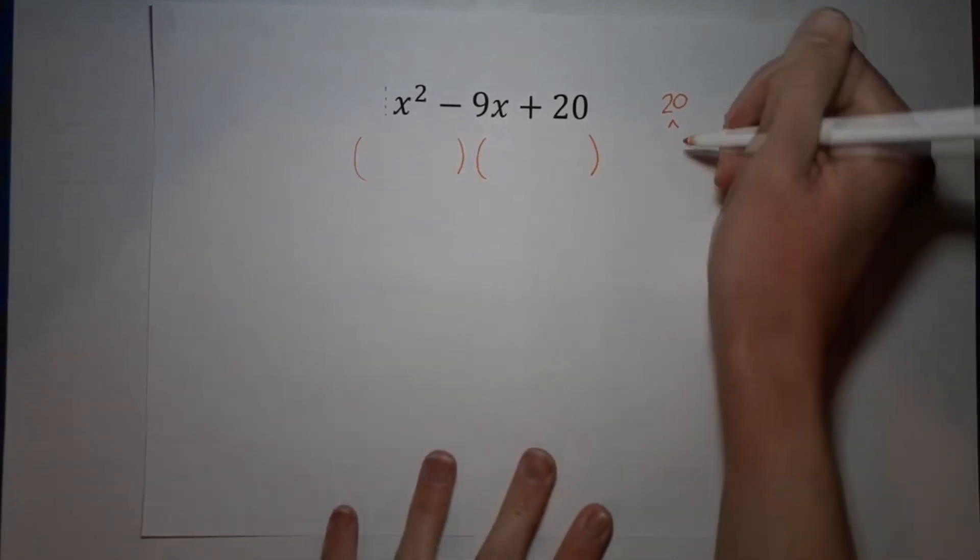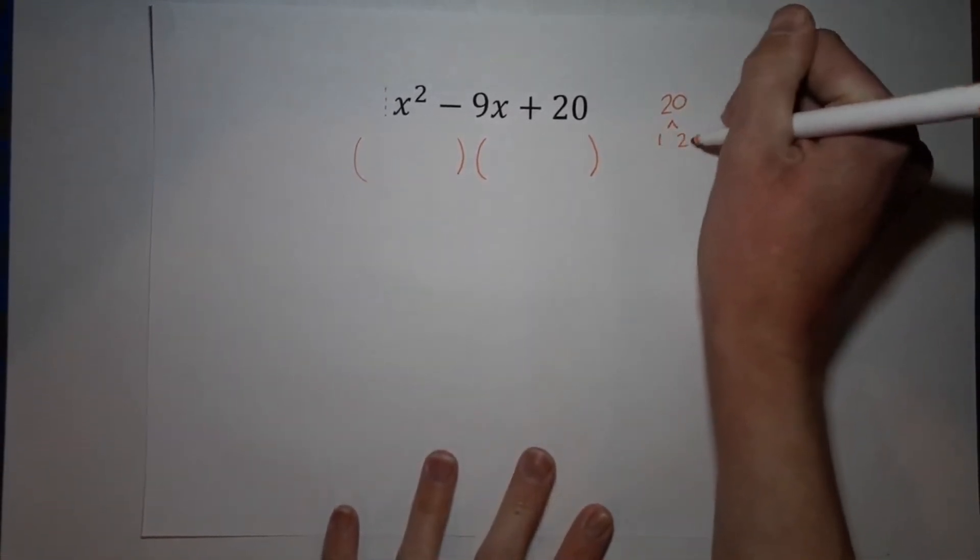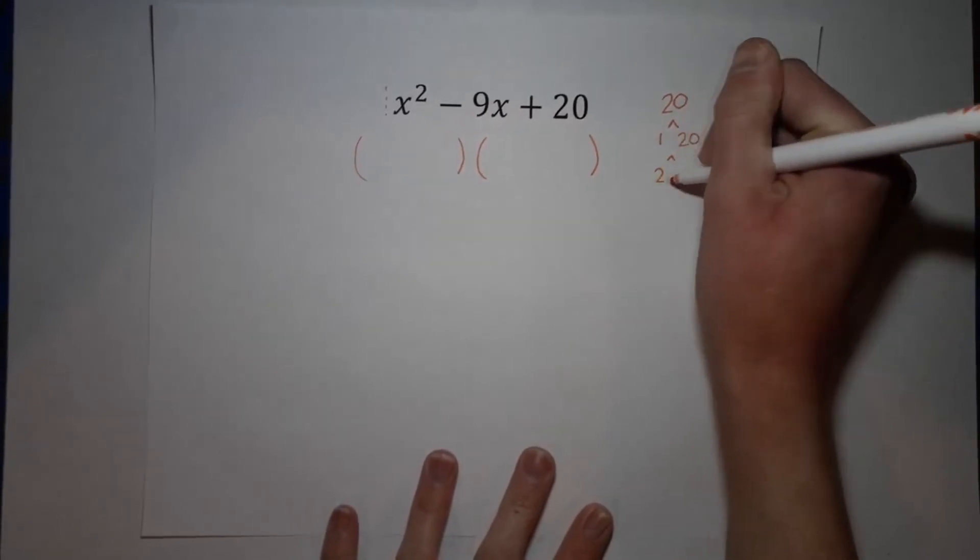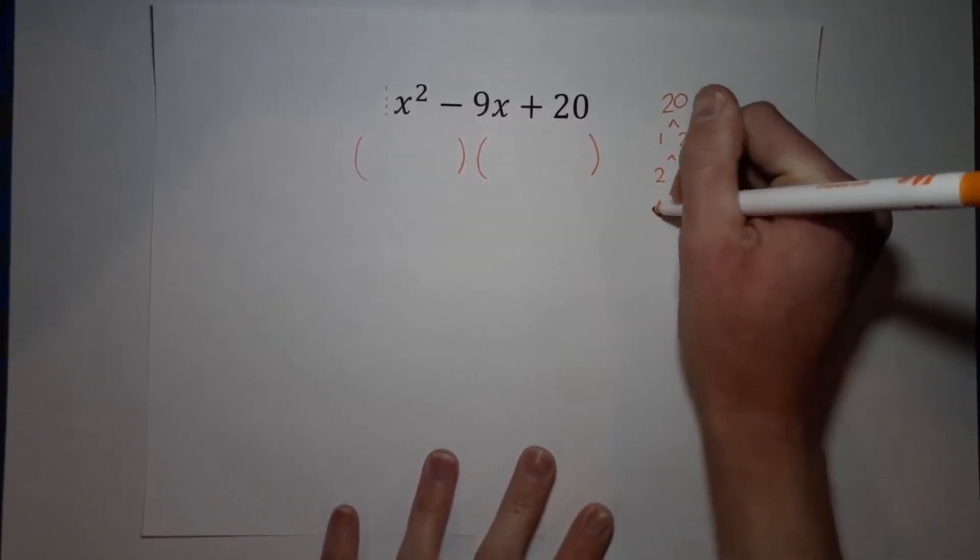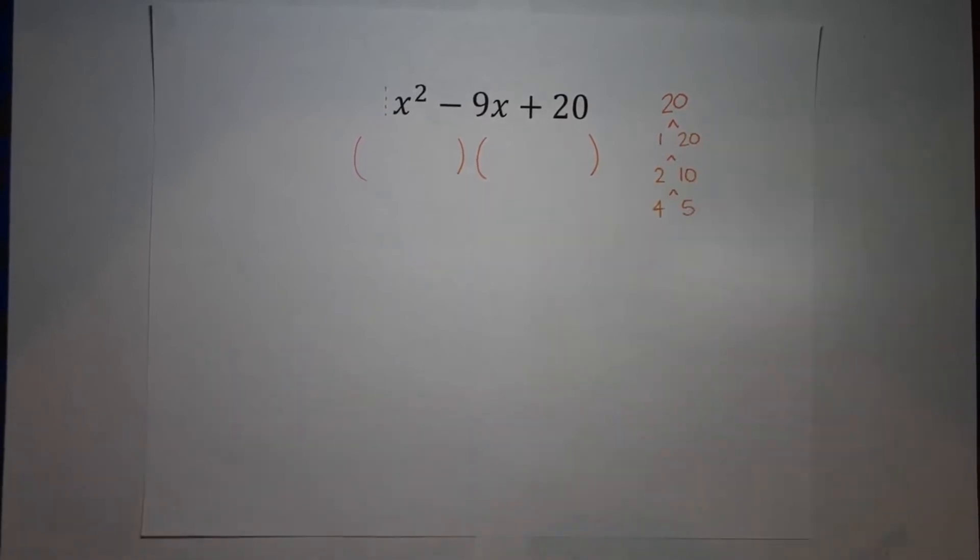So I'm going to start by just listing the factors of 20. So we've got one times 20, two times 10, three doesn't go in, four times five, and that is all of them.